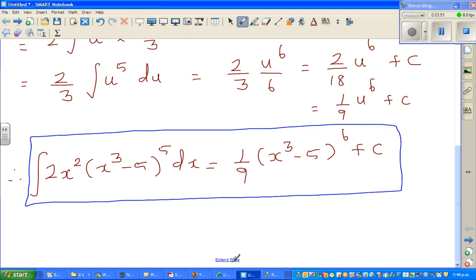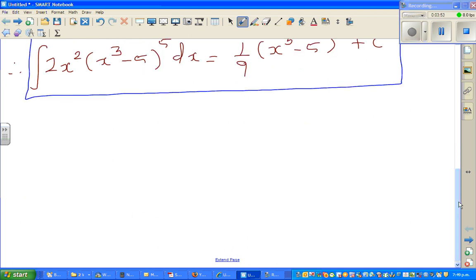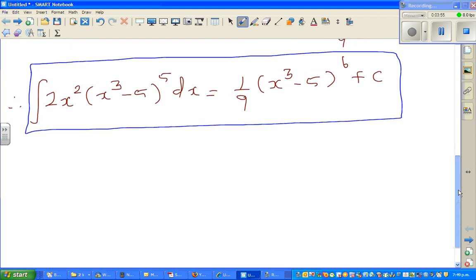But I'm going to use a calculator to figure this out. So I'm going to use definite integration between 0 to 1 of the same function. This is how I'm going to check. So what happens if the question was definite integration of 0 to 1 of 2x squared times (x cubed minus 5) to the power 5 dx? And let's assume that the answer that we've got is right.